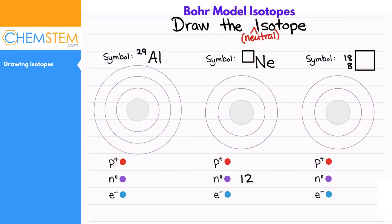I think this is fun, we're gonna have fun. So this says draw the neutral isotope. We have a large isotope to start, which is the aluminum-29 isotope. If we look on the periodic table we're gonna see that aluminum is the 13th element, which means it has 13 protons.